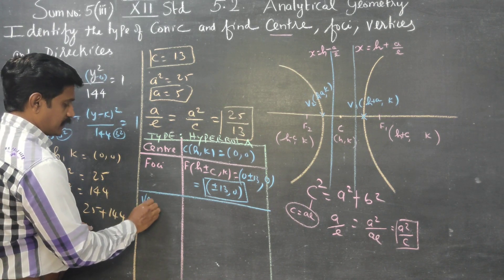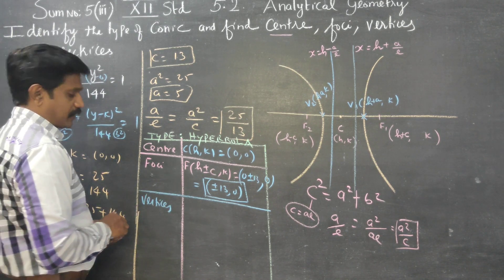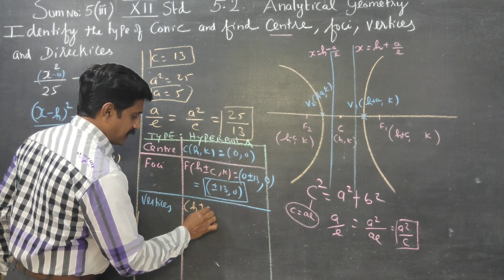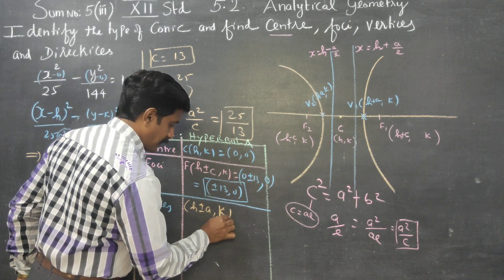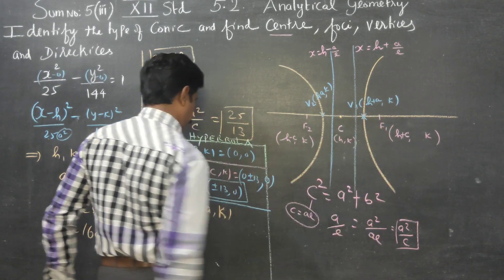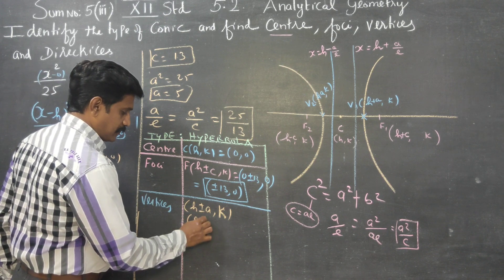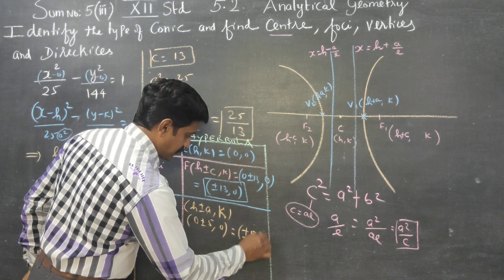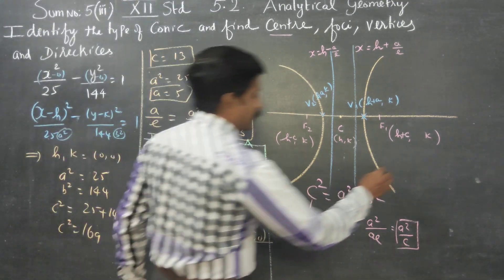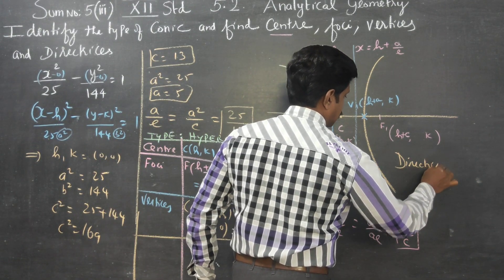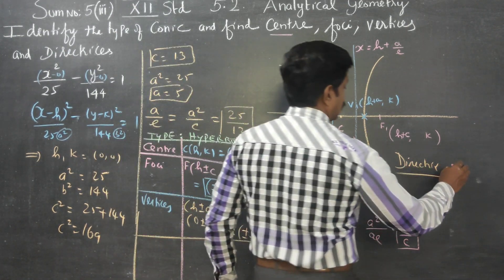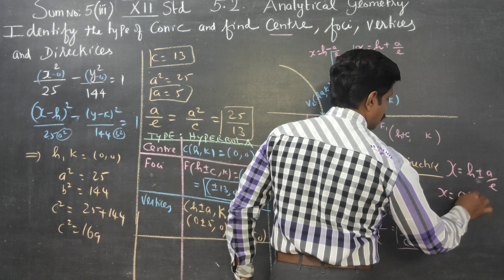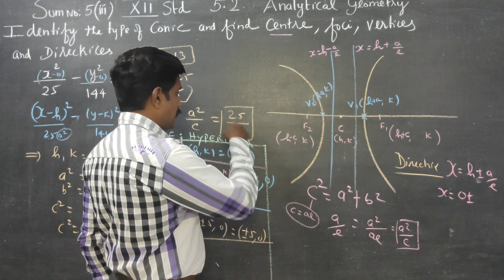Then coming to vertices. The vertices formula is (h ± a, k). H is 0, so it becomes (0 ± 5, 0) = (±5, 0). Coming to directrices: the directrix formula is x = h ± a/e. H is 0, and a/e = 25 by 13.